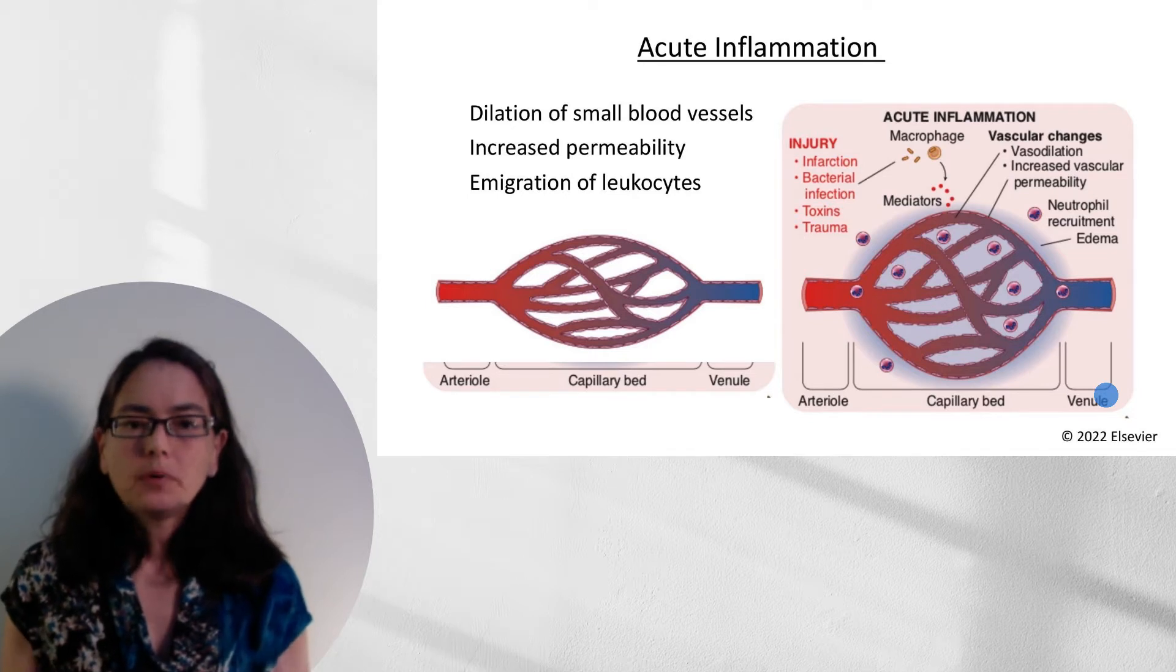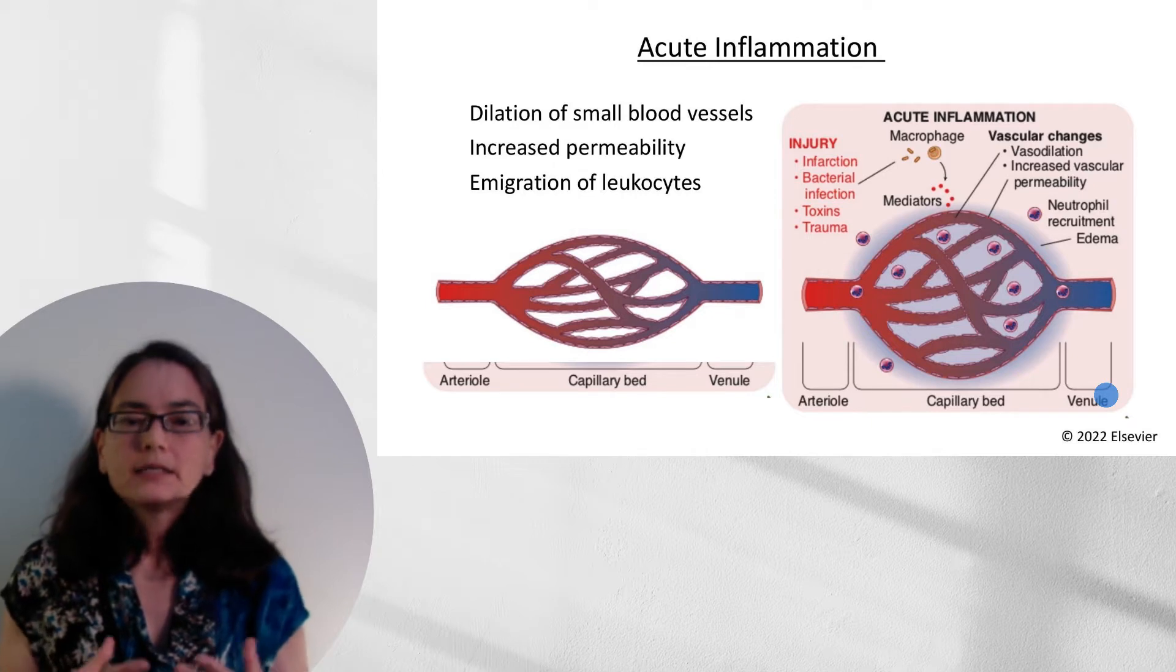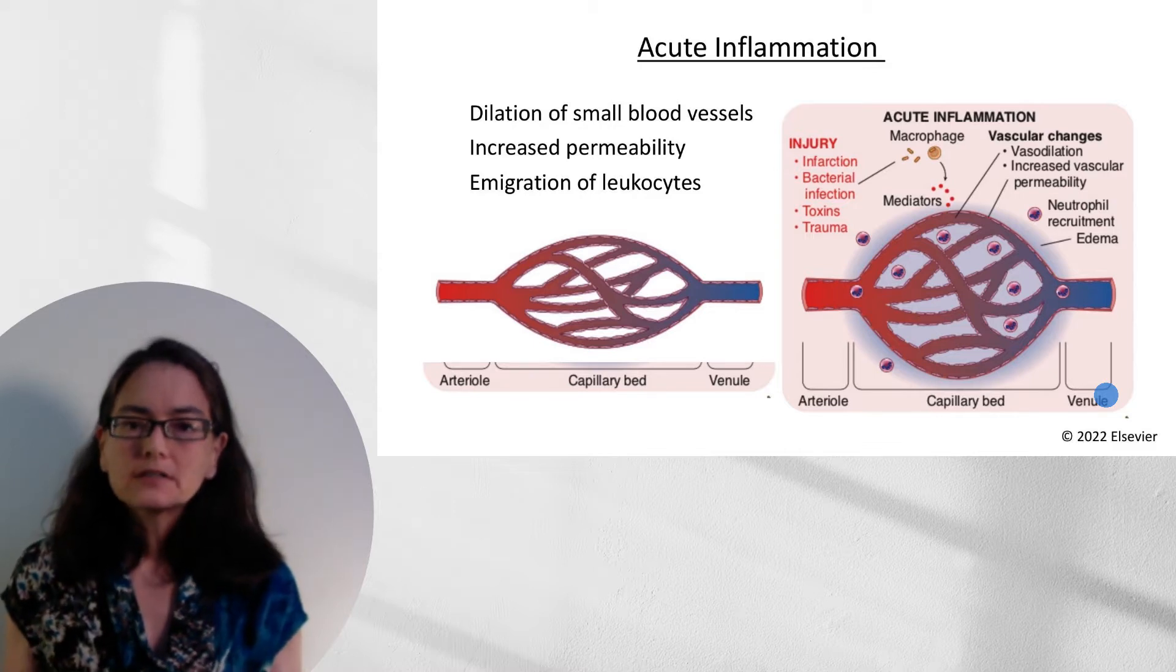Now let's work through the process. So acute inflammation is really characterized by three processes: dilation of the small blood vessels, increased permeability, and emigration of leukocytes. So how does this occur?